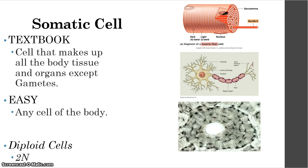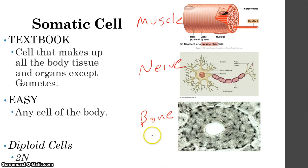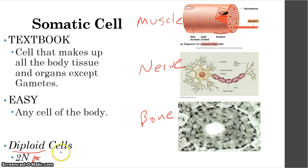One of the first words you're going to come into contact with is somatic cell. The textbook definition says it's a cell that makes up all the body tissue and organs except for gametes. The easy definition is this is any cell in your body — muscle cells, nerve cells, bone cells, heart cells, skin cells, blood cells — all of these are considered somatic cells. Something interesting about them is that they're also called diploid cells, or 2N cells, and we'll figure out what that means later.